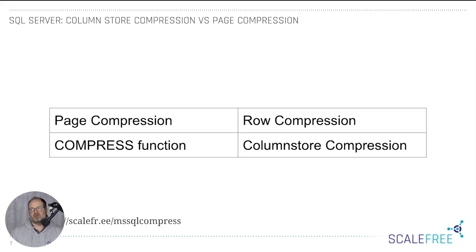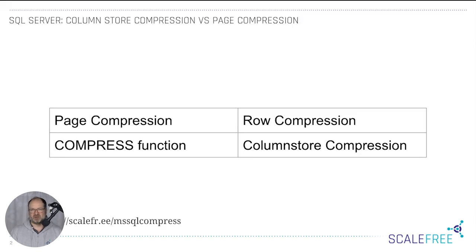For all other tables, I would turn on page compression — that's the basic pattern. On blob data, I need to double-check whether page compression already compresses blob fields in SQL Server; I'm not sure. But the basic idea is: page compression is your 101 pattern, and for bridge tables, non-historic link tables, and dependent chart links, you turn on column store compression.